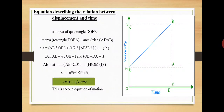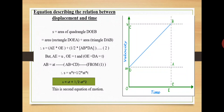Therefore, s = area of quadrilateral DOEB = area of rectangle DOEA plus area of triangle DAB. The formula for the area of a rectangle is length × breadth, and area of a triangle is ½ × base × height. So s = (AE × OE) + (½ × AB × DA). Let this be equation number two.